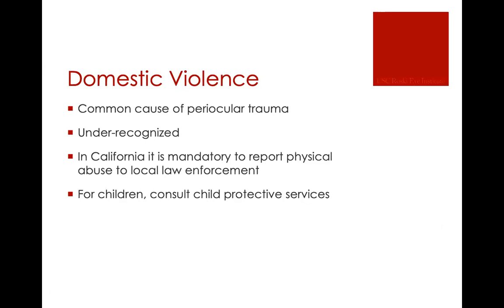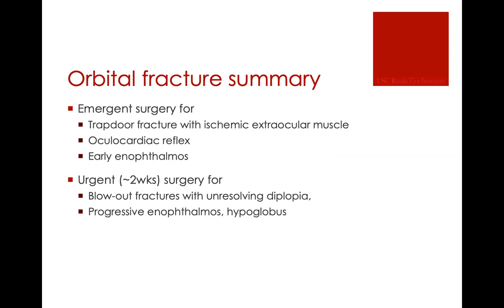One thing to note: a lot of orbital trauma may be caused by domestic violence. This is underrecognized and we probably don't ask about it enough. It is mandatory to record it if you find evidence of domestic violence, and for children you always involve child protective services. In summary: emergent surgery for trapdoor fractures with ischemic muscles, oculocardiac reflex, or early enophthalmos. Surgery within two weeks for unresolving diplopia, enophthalmos, and hypoglobus. If you don't have symptoms, surgery is not needed.